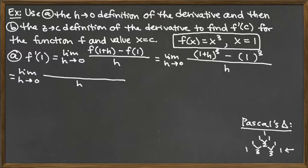The first Pascal's Triangle coefficient is 1, accompanying the first term in the binomial raised to the third power. That first term is 1 — since we have 1 plus h — so it would be 1 cubed. We follow that with the second coefficient, 3, and this time we multiply by not 1 cubed but 1 squared, dropping the power on the first term by 1.